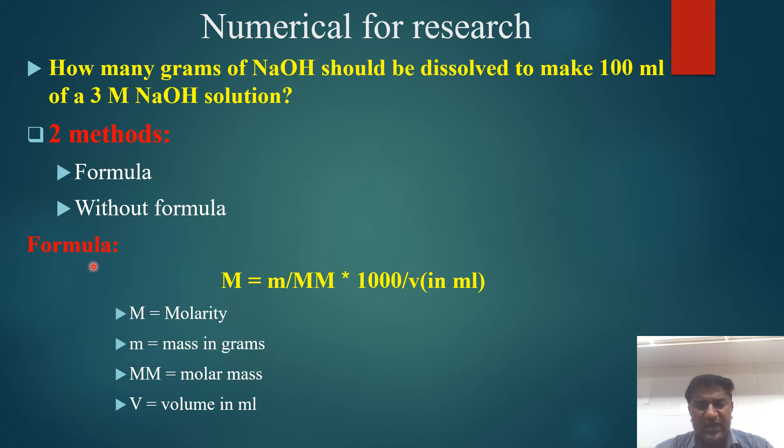By using the formula: M = (m/MM) × (1000/V) in ml. Here, M is molarity, small m is mass in grams, MM is molar mass, and V is volume in ml.